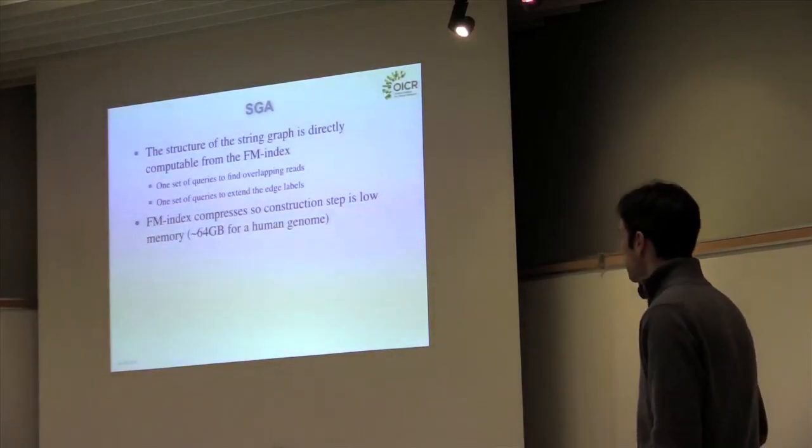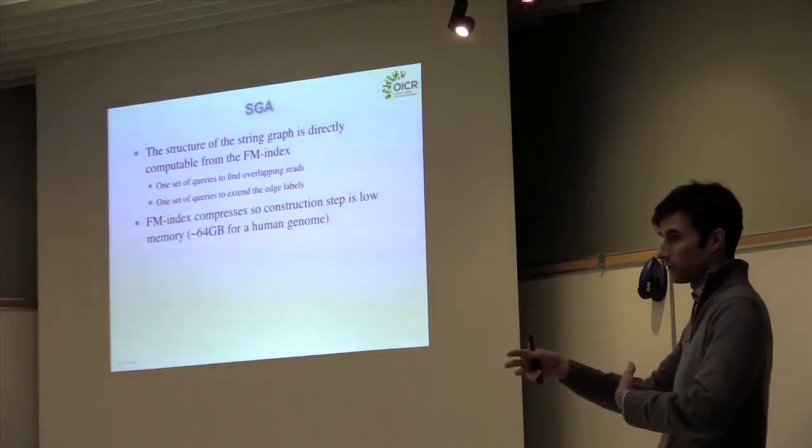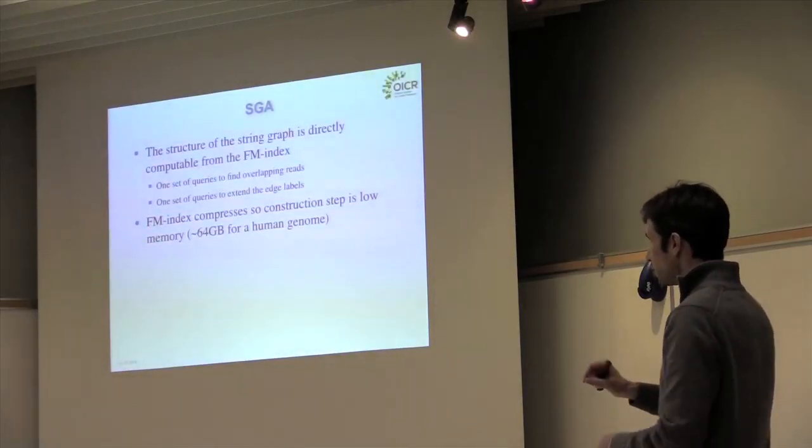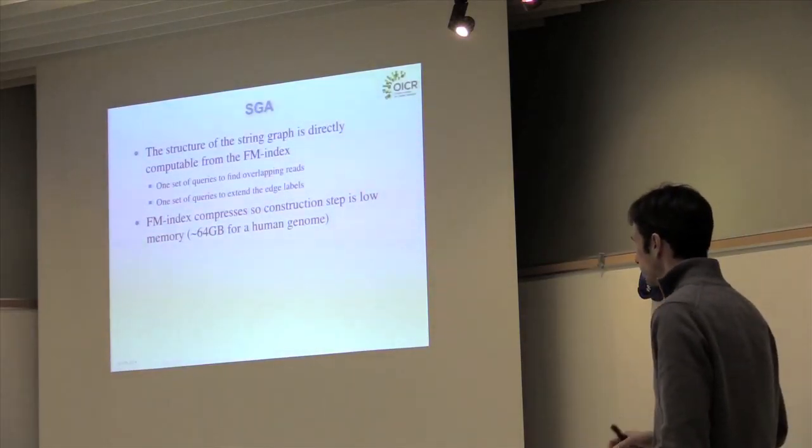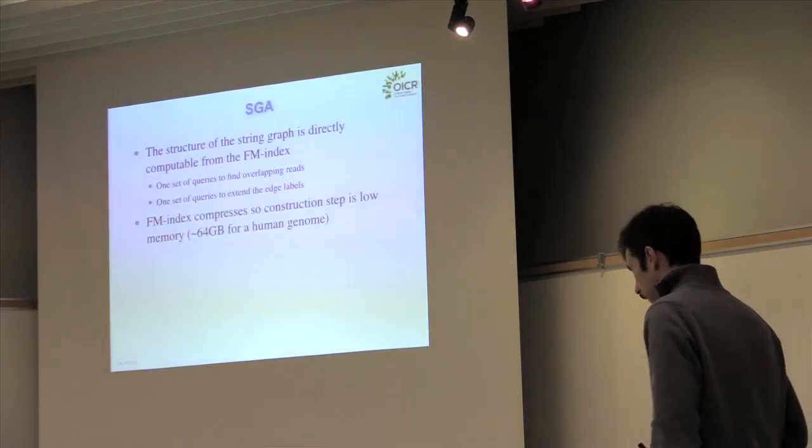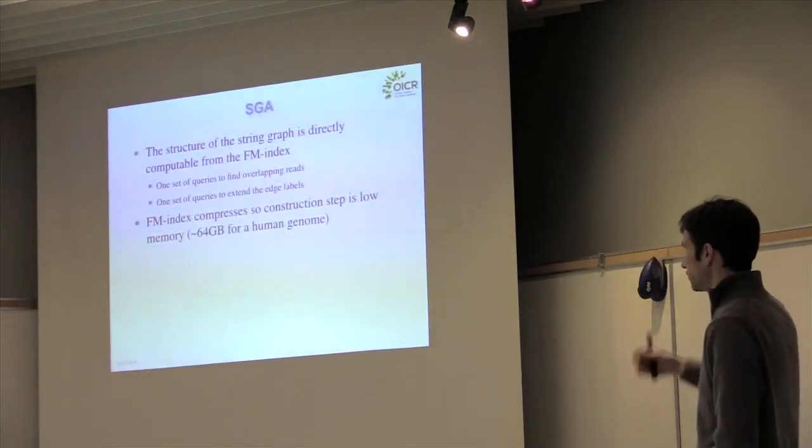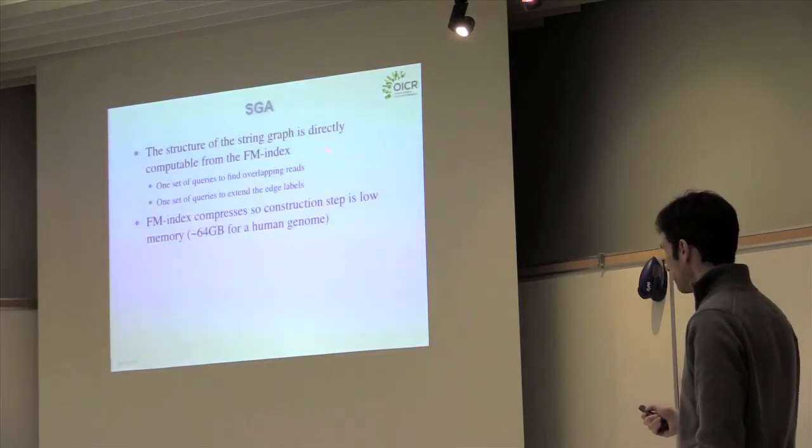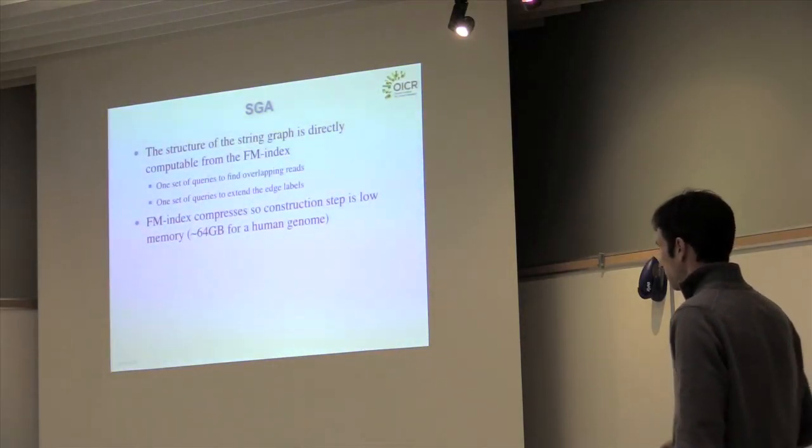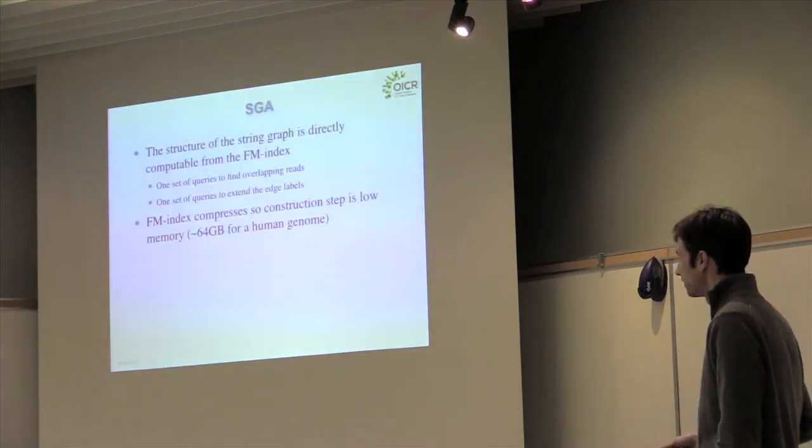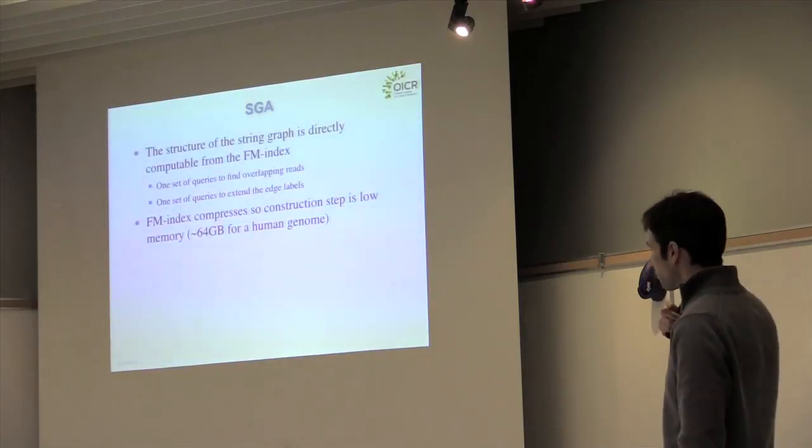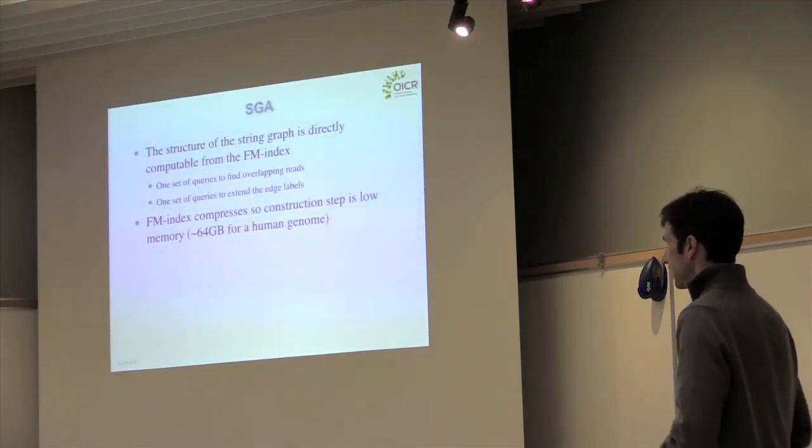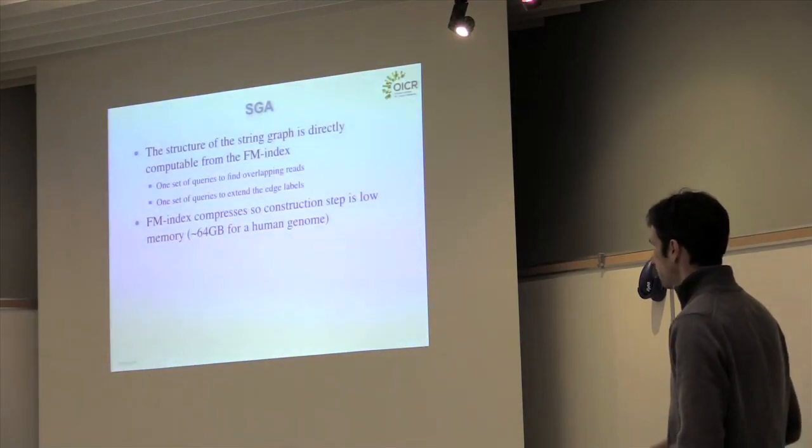What we did is we took the FM index and then we derived a set of queries that allow you to compute overlaps using these same techniques as counting. Once you know where all the overlaps are, you can extend them to determine the sequence of the edge labels. In this step where you determine the sequence of the edge labels, you can determine which edges in the graph would be transitive and which edges are the irreducible edges retained in the graph. We had a paper in Bioinformatics in 2010 that described these algorithms. The important thing to note is that by working with the compressed representation of our data, we get both a time-efficient construction algorithm for this assembly graph and also a space-efficient construction algorithm, where we can build the string graph in about 64 gigabytes of memory for a human genome.